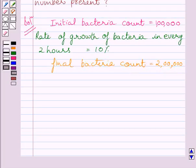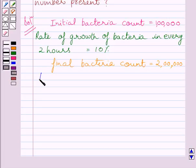We have to find in how many hours the bacteria count reaches 2 lakhs. We are also given that the rate of growth of bacteria is proportional to the number present. Let us assume that the number of bacteria present is equal to B.